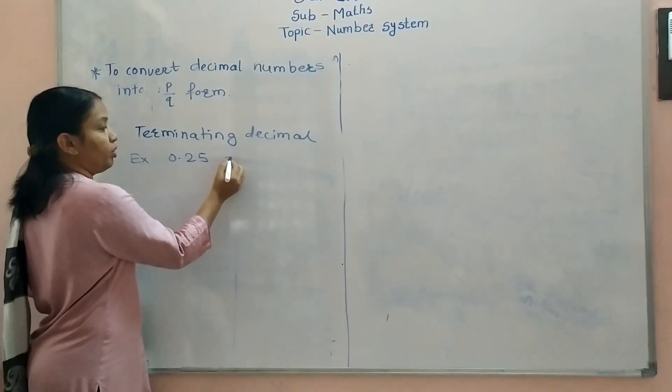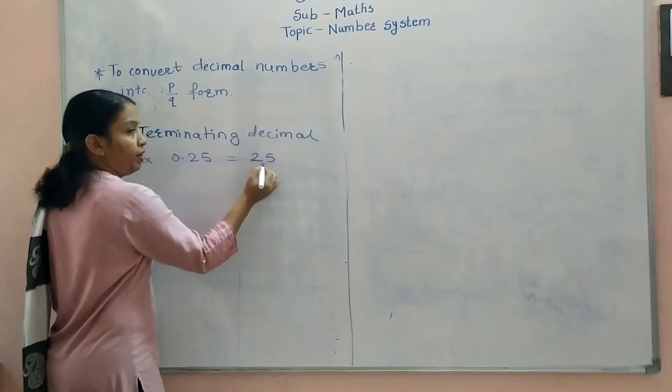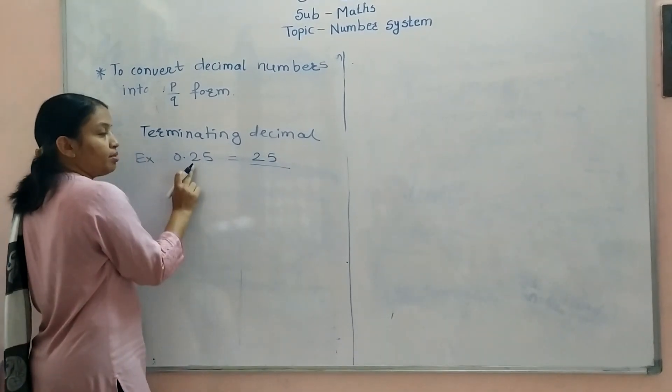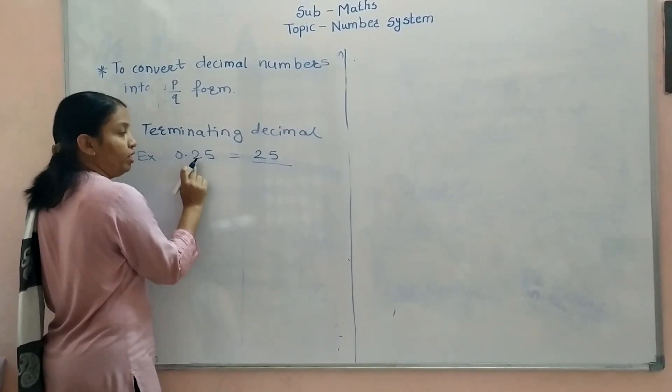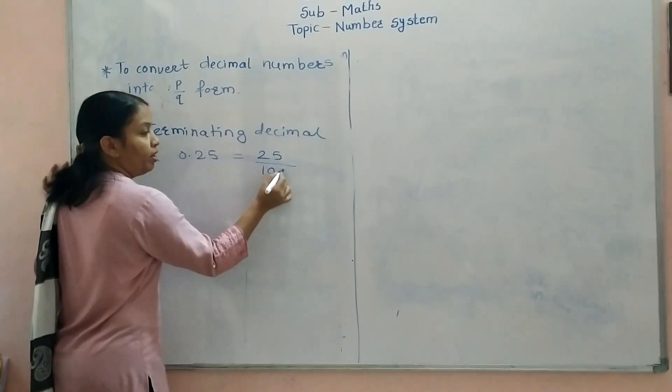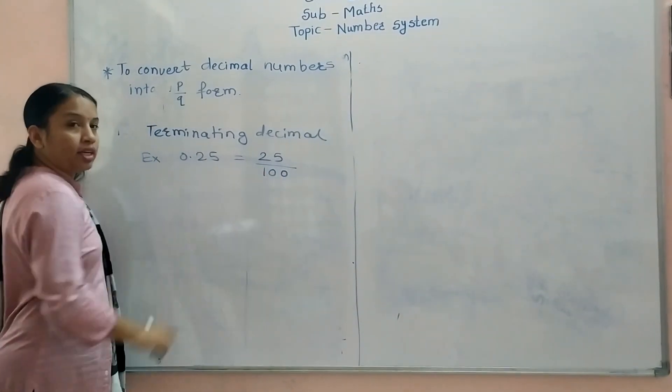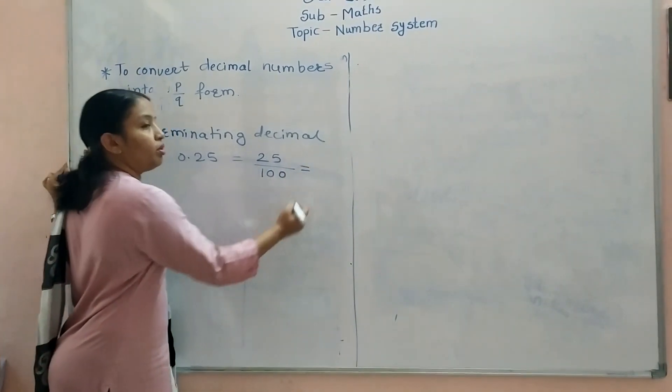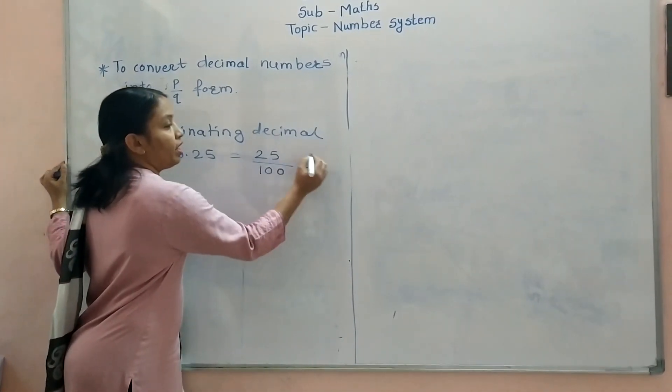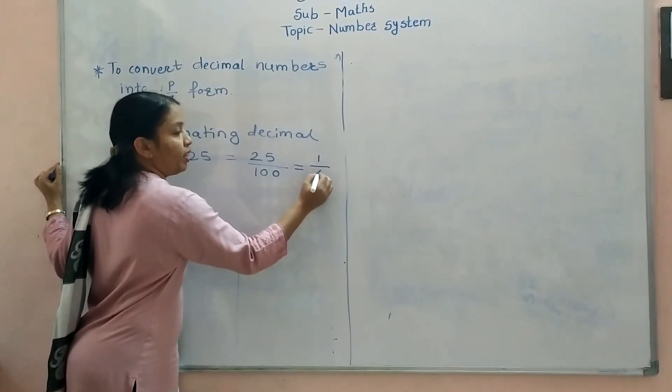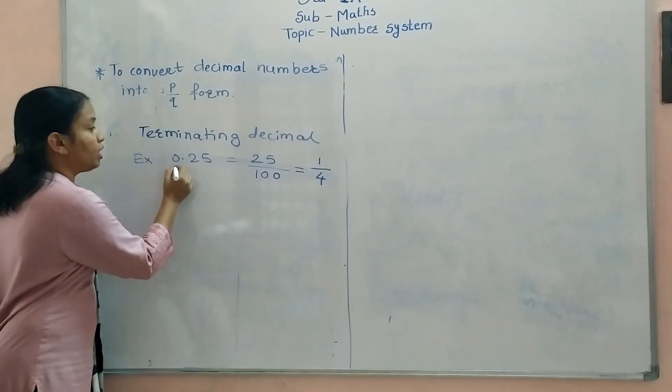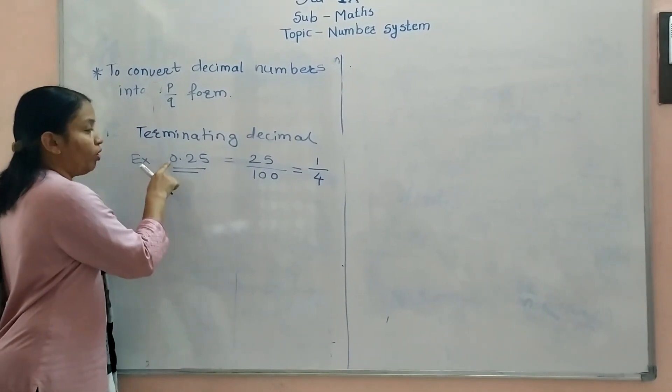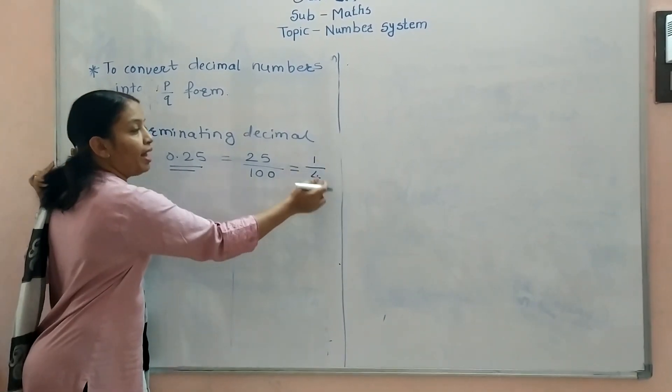Now, how to convert it? Write as it is, 25. Then, how many digits are there after decimal point? 1, 2. Therefore, 1, 2 zeros are there. Now, reduce it into their lowest form. You know that 25 ones are 25 and 25 fours are 100. Therefore, what is the P by Q form of 0.25 is 1 by 4.